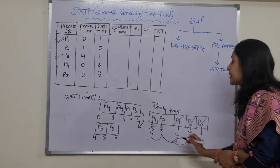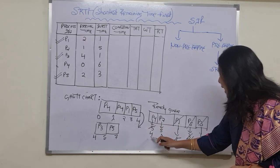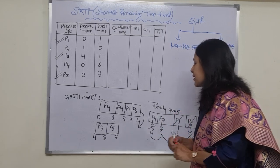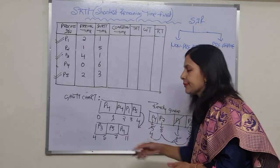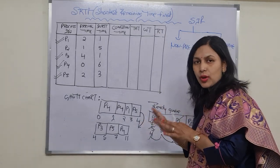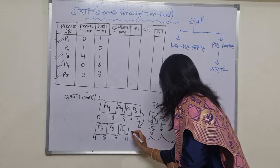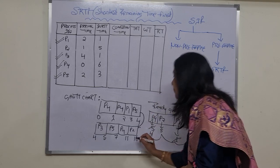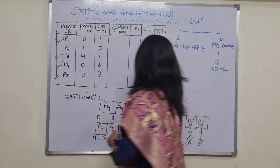Process P5 has been completely executed. Now only P4 and P2 are left. Process P4 has the shorter burst time of 4, so P4 runs from time 7 to 11 and completes. Then the only remaining process is P2 with burst time 5, so P2 runs from time 11 to 16 and completes.